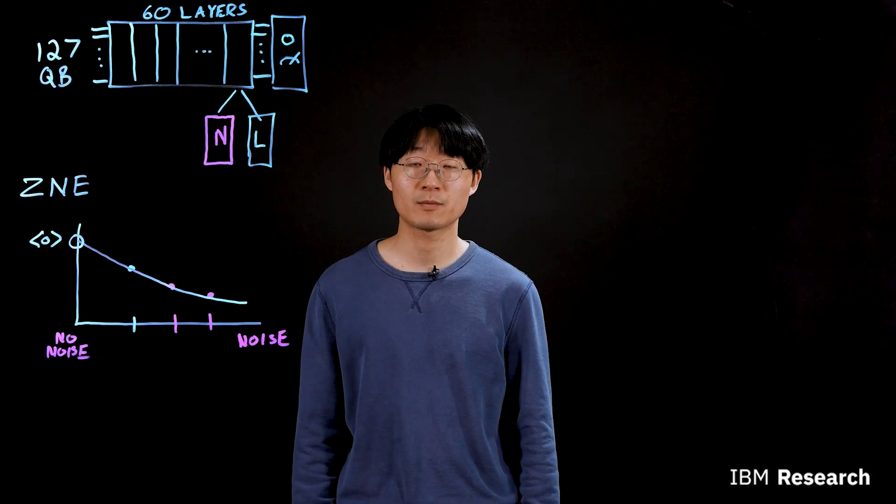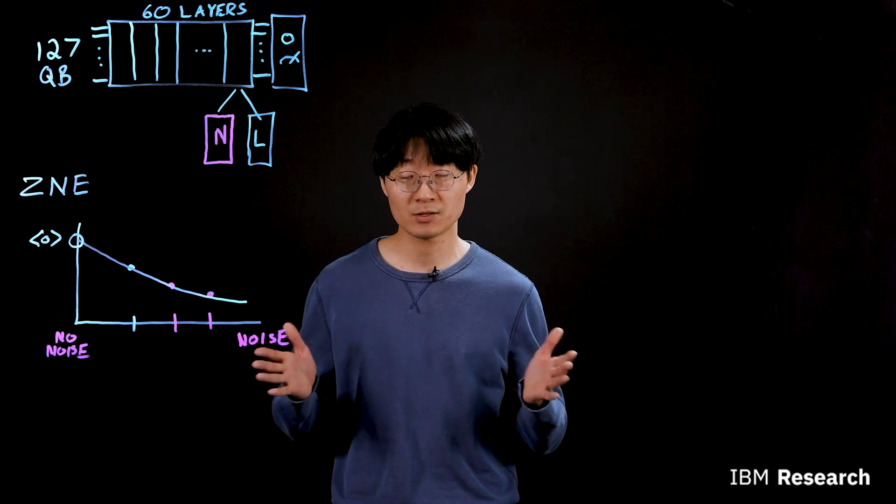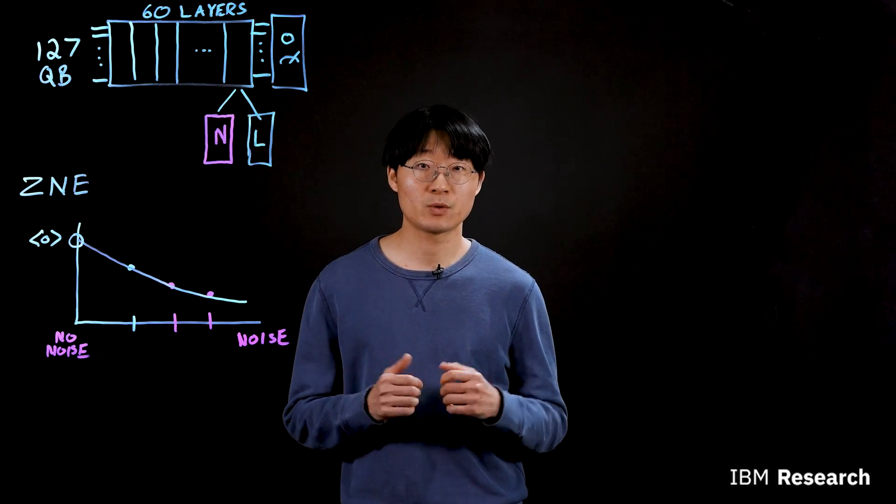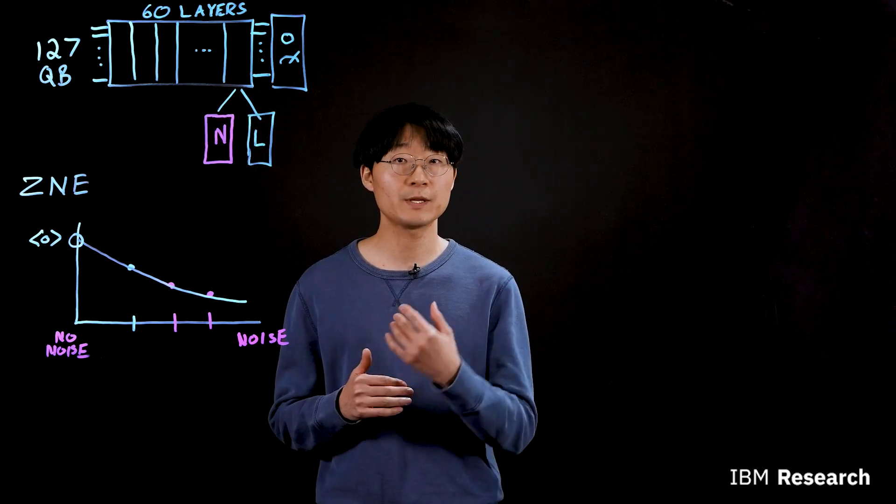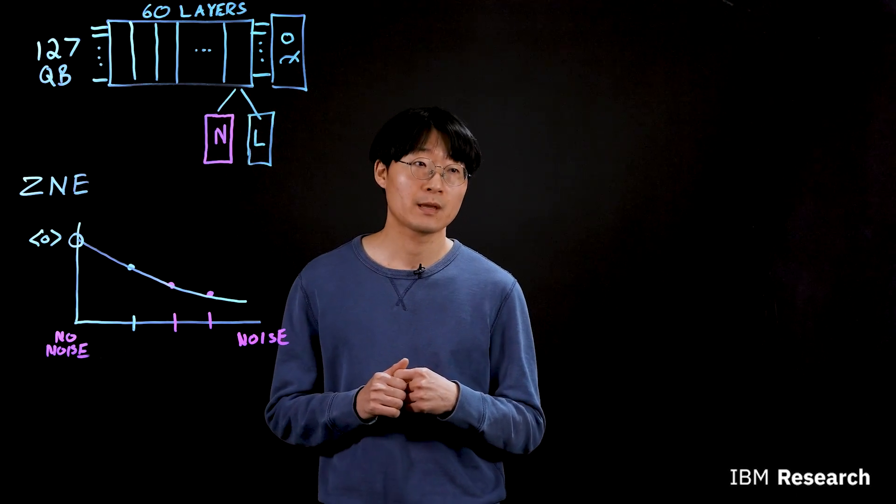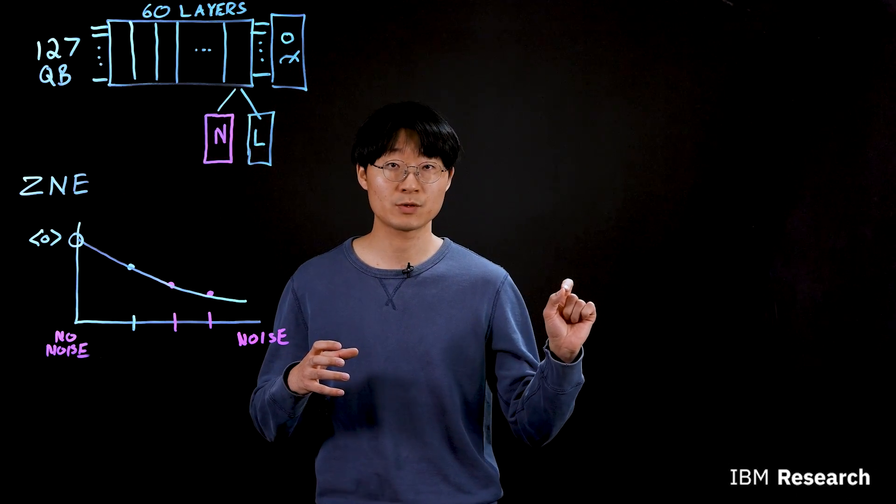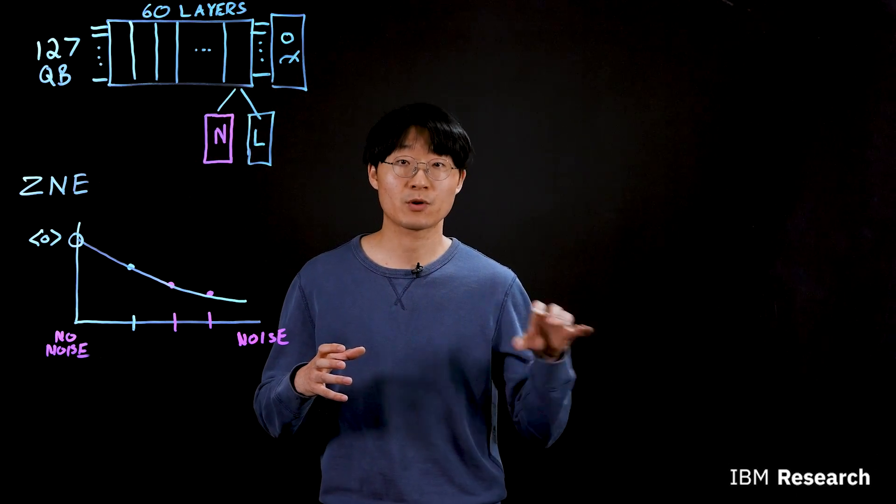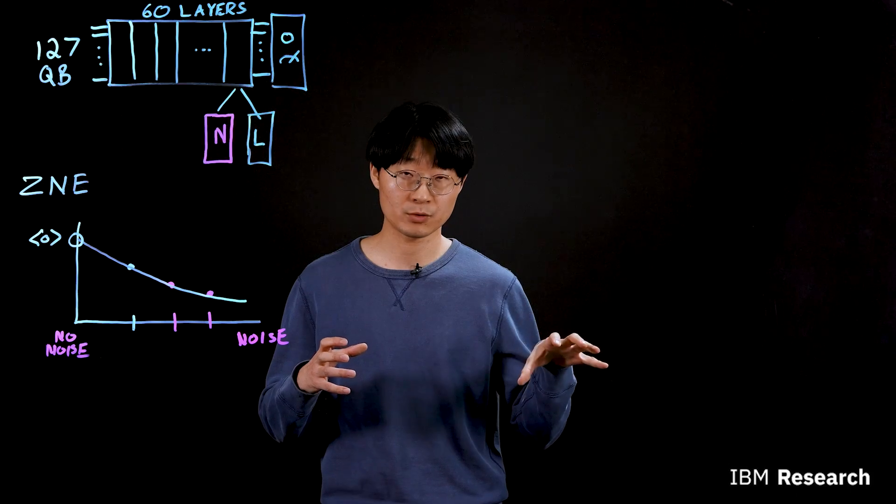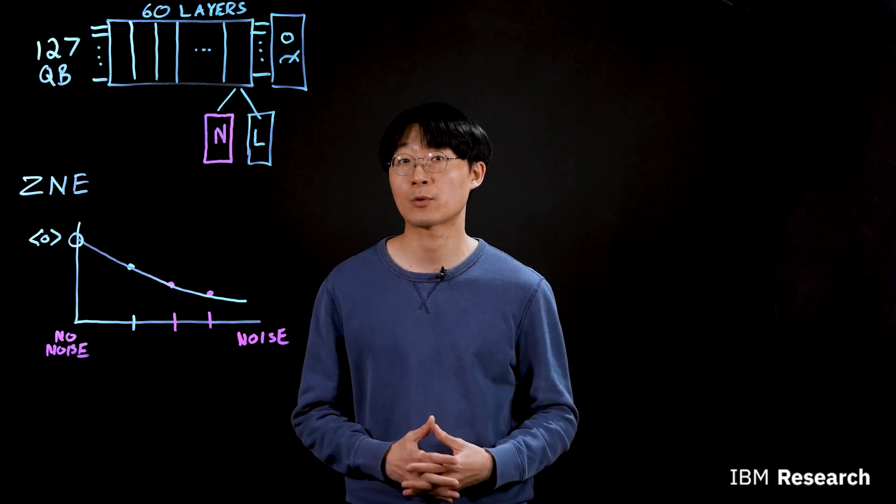My name is Youngseok Kim, researcher from IBM Quantum. Like what Andrew said, I'm going to talk about a little bit more detail about what we did. So to make a long story short, what we did is we perform an experiment on spin dynamics of transverse field Ising model. So we perform experiments on our quantum processor and we work with our collaborators at UC Berkeley and they produce corresponding results in classical computer. And we compare our results against each other to build a confidence on our method.